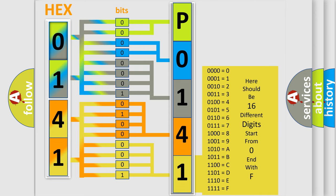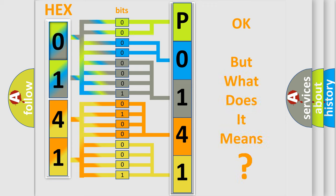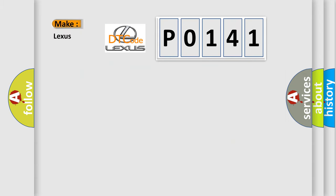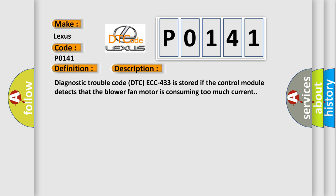We now know in what way the diagnostic tool translates the received information into a more comprehensible format. The number itself does not make sense to us if we cannot assign information about what it actually expresses. So, what does the diagnostic trouble code P0141 interpret specifically? For Lexus vehicles, the basic definition is: Blower fan motor, too much current. Diagnostic trouble code DTC ECC 433 is stored if the control module detects that the blower fan motor is consuming too much current.